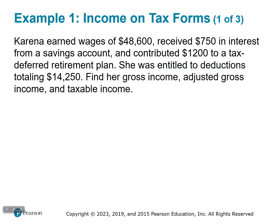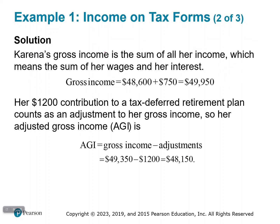Let's look at income on tax forms with an example. Karina earned wages of $48,600, received $750 in interest from a savings account, and contributed $1,200 to a tax-deferred retirement plan. She was entitled to deductions totaling $14,250. Find her gross income, adjusted gross income, and taxable income. Karina's gross income is the sum of all her income — that means all the wages and all the interest, including the savings account interest. So we add those together — that's all the money she made.